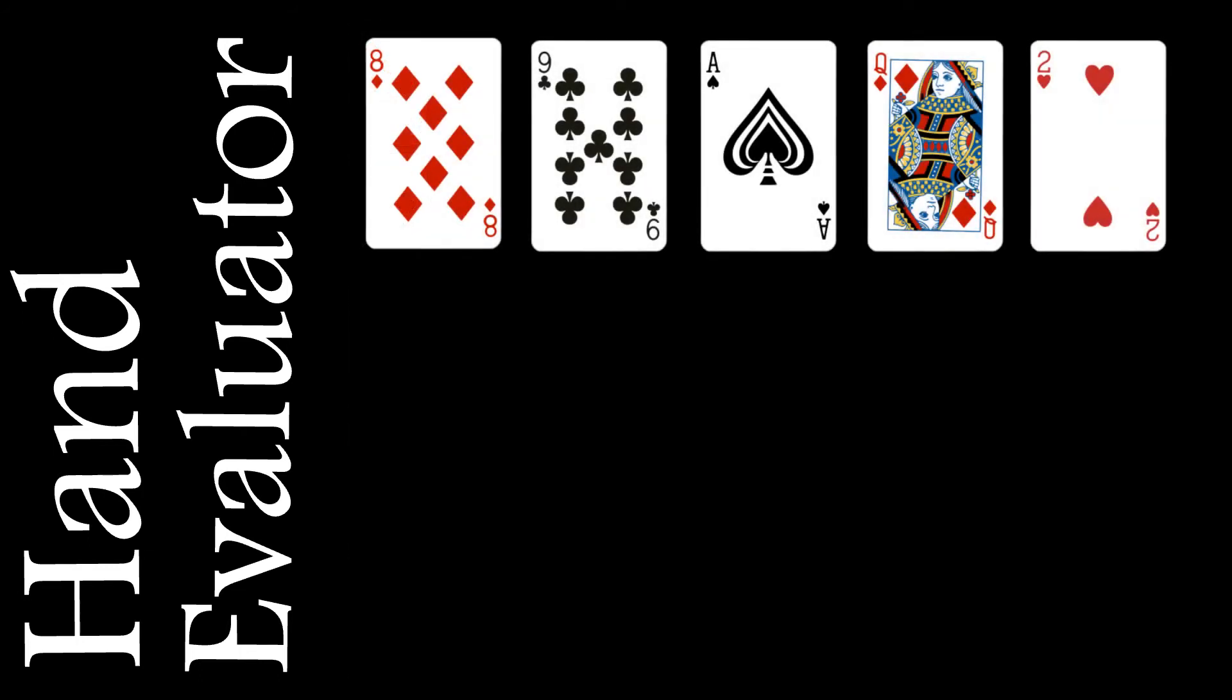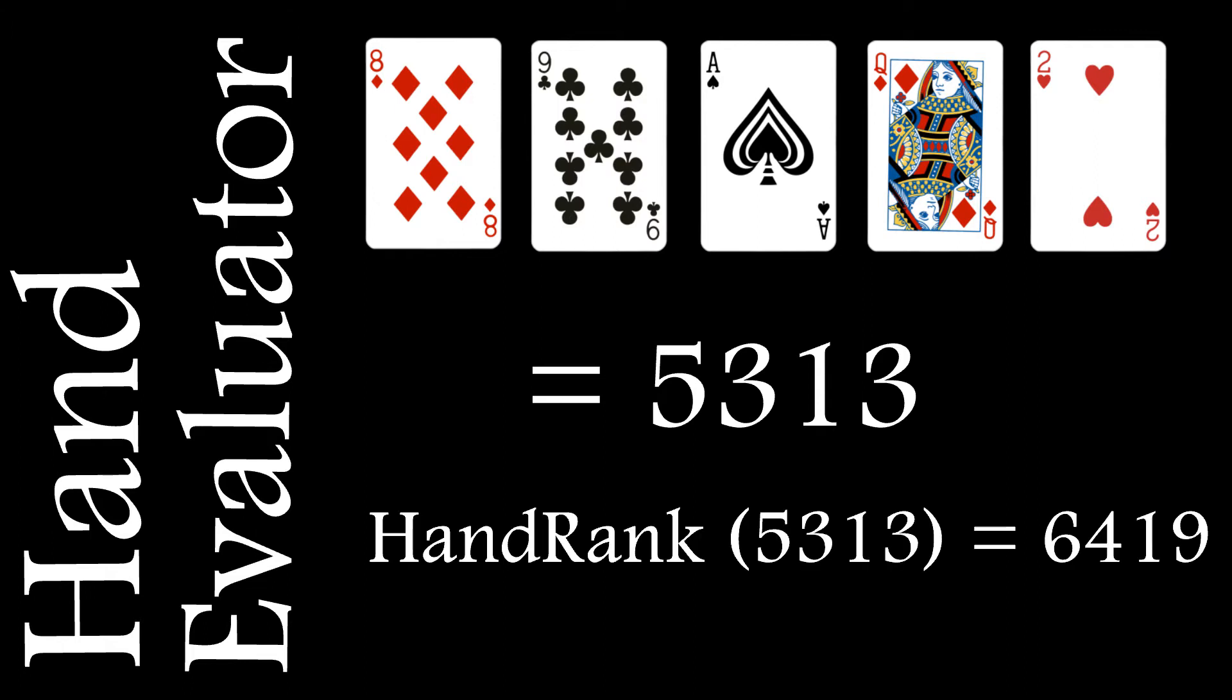What's really needed is a function which can take any five card poker hand with the cards in any order, convert this into some number and use this as the index in a lookup table to find the correct hand ranking.